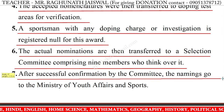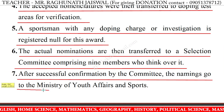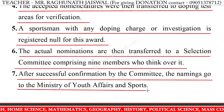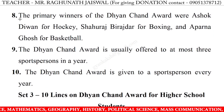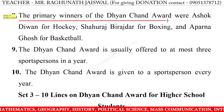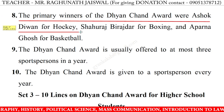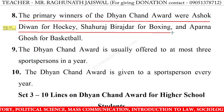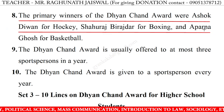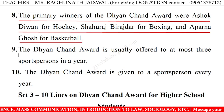The actual nominations are then transferred to a selection committee comprising 9 members who deliberate over them. After successful confirmation by the committee, the nominations go to the Ministry of Youth Affairs and Sports. The primary winners of the Dhyanchand Award were Ashok Diwan for Hockey, Shahraj Virasdar for Boxing, and Aparna Ghosh for Basketball.